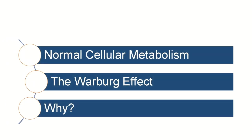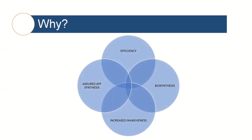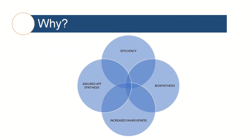Now that we've looked at the basics of the Warburg effect, let's look at why this happens. A number of theories and hypotheses have been proposed to explain this, and I'm going to look at four of the more popular reasons very briefly. It is worth noting that there are many others, including things such as cell signalling, which I haven't gone into in this video. The four that I'll be looking at are: efficiency, assured ATP synthesis, biosynthesis, and increased invasiveness.